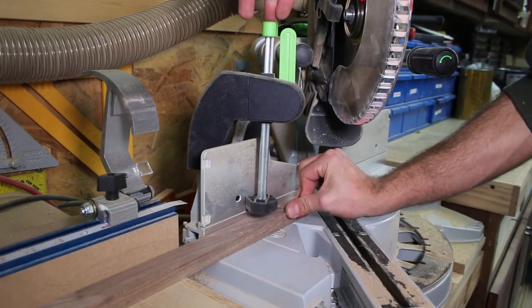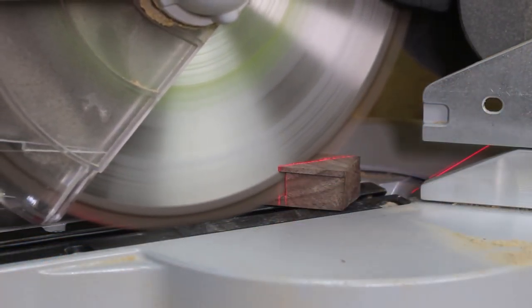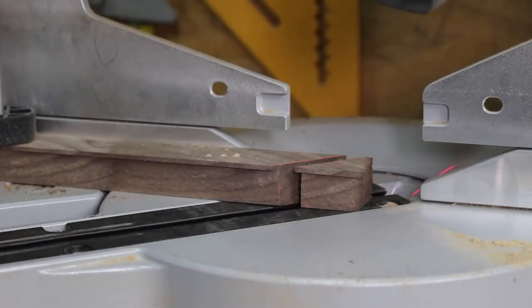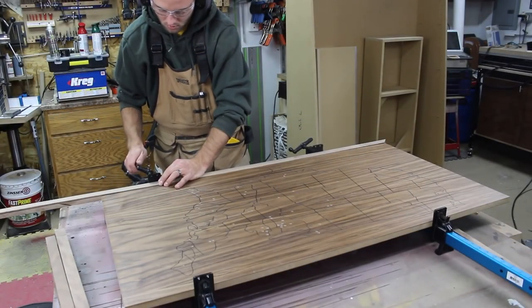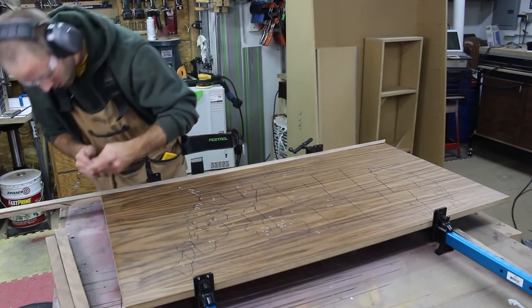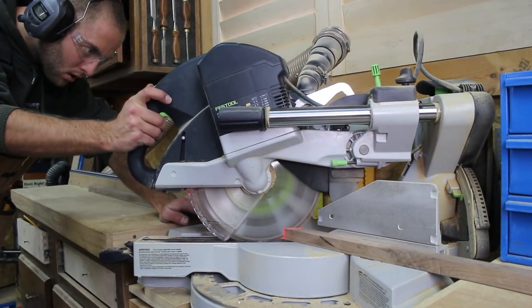I cut the miters at the miter saw. It is very important to use a hold down to keep the blade from pulling the material and ruining the miter. I clamp the section in place and use a fine pencil to mark the other side of the miter. I use a laser on my miter saw to get me close and slowly sneak up on the fit with a few test fits and going back and forth to the saw.